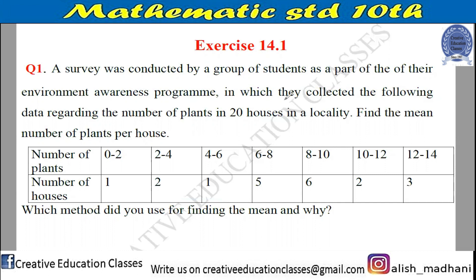In the survey, they collected data regarding the number of plants in 20 houses in a locality. Find the mean number of plants per house. Which method do you use for finding the mean and why? They have told us to find the mean number of plants. In the table, they have given us the class and the frequency.